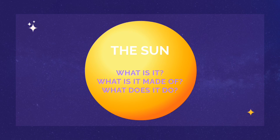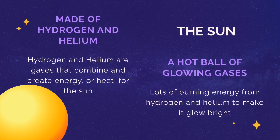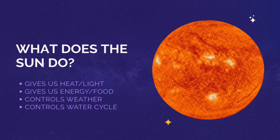Let's start by talking about the sun. What is it, what is it made of, and what does it do? Simply put, the sun is a giant hot ball of glowing gases. The two gases called hydrogen and helium combine to make the sun and create its energy or heat. The reason the sun always looks so hot and bright is because these gases burn lots and lots of energy to make it so hot.